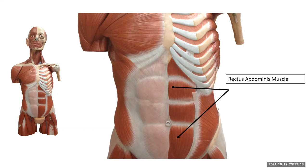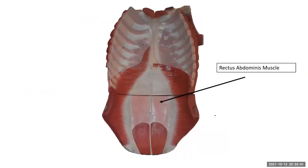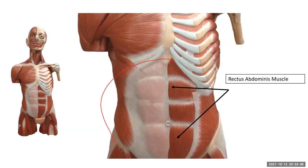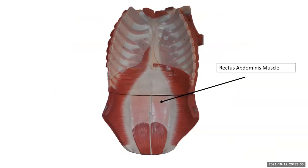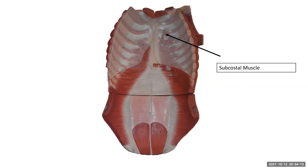Here's your six-pack muscle — the rectus abdominis. The fibers are parallel, running straight up and down, so that's rectus, and it's in the abdominal region — hence rectus abdominis. Looking at the muscle from the inside, the fibers run parallel to the linea alba. Also visible up here is the subcostal muscle, which attaches onto the ribs. In between the muscle bellies of the rectus abdominis are connective tissue structures called tendinous intersections — these give the washboard ab appearance in people who are very fit.